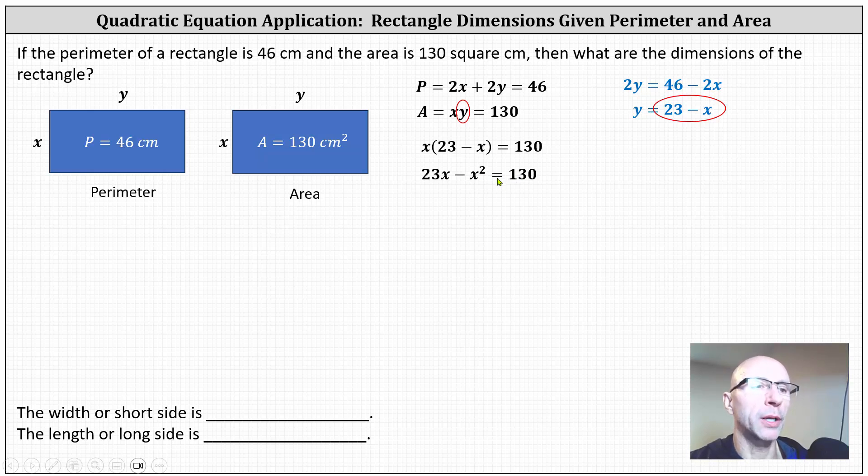Notice here we have a quadratic equation. We normally prefer the x squared term to be positive. Let's move the 23x and the minus x squared to the right side by subtracting 23x and adding x squared to both sides. This gives us 0 equals x squared minus 23x plus 130.